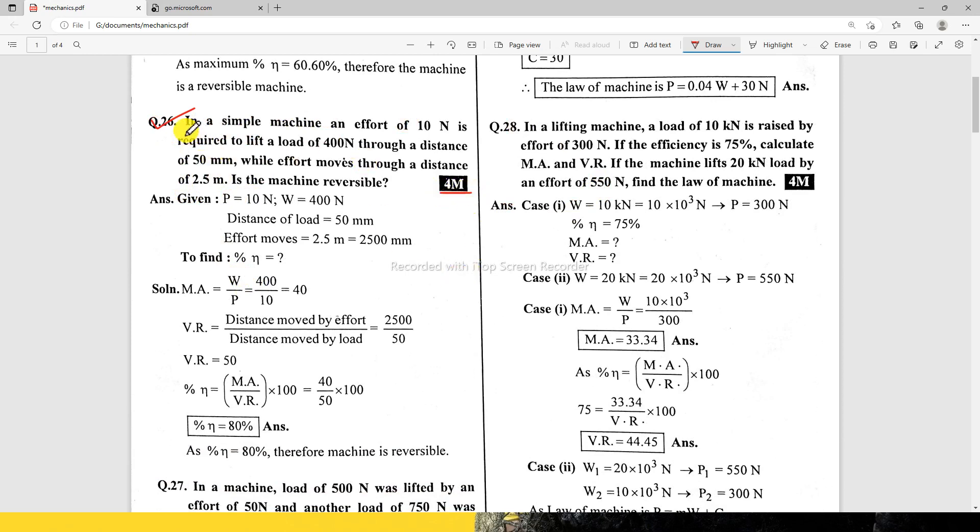In a simple machine, an effort of 10 newton is required to lift a load of 400 newton through a distance of 50 mm, while effort moves through a distance of 2.5 meter in the machine. Is the machine reversible?